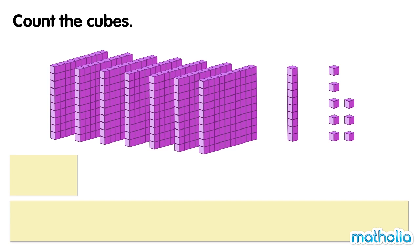Let's count the cubes. 100, 200, 300, 400, 500, 600, 700, 710, 711, 712, 713, 714, 715, 716, 717, 718. There are 718 cubes.